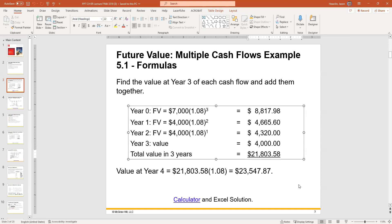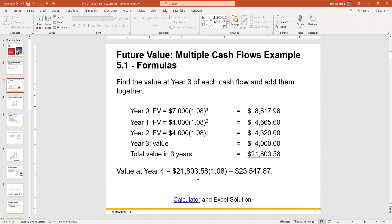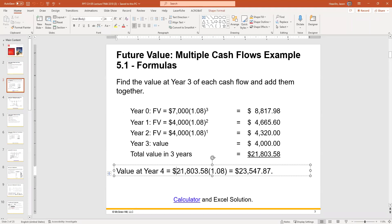At that point, your account should have $21,803.58. If you were to let it sit for another year, but you do not deposit an additional $4,000, that's it, no more deposits, you're just going to let it sit there for another year. You can grab this number and grow it by one more year. And that's what you see here. And then you will have $23,547.87.